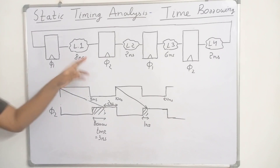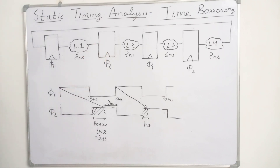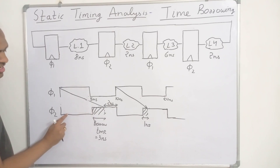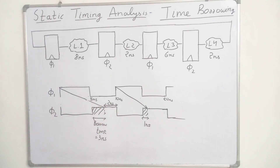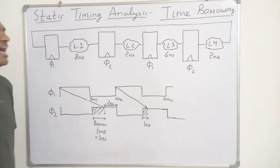Since we have designed this using positive level-sensitive latches, the second latch is transparent and can accept data till 10 nanoseconds, because it depends on the positive level. Φ2 goes high at 5 nanoseconds and stays high till 10 nanoseconds, so it can accept data till 10 nanoseconds. Since 8 nanoseconds is within this boundary, the signal along path L1 can travel through the latch and continue, so there is no timing violation for this circuit.